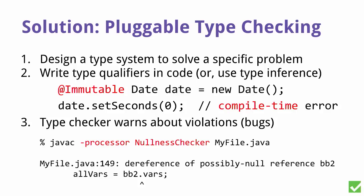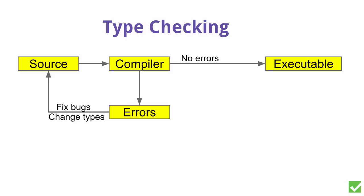So now let's think about what these pluggable type systems are. To express your security property in a formalized way, you put it into a type system. You annotate the application with this specification — you make explicit what assumptions you have about the behavior of your program. Then as a third step, you use a pluggable type checker to enforce the correct usage of your application. In our case, the pluggable type system is a plug-in to the Java compiler and an annotation processor.